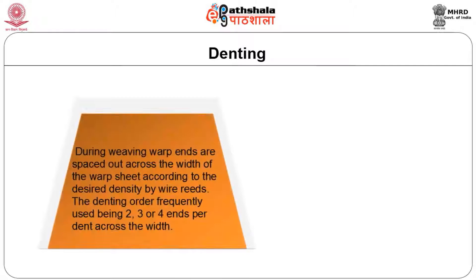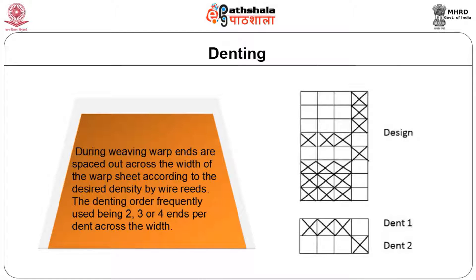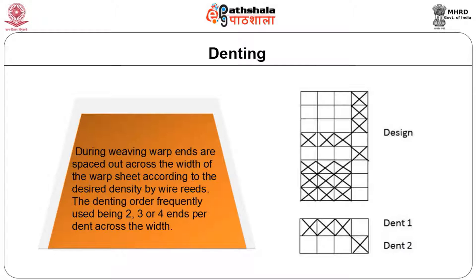During weaving, warp ends are spaced out across the width of the warp sheet according to the desired density by wire rates. The denting order frequently used is two, three, or four ends per dent.